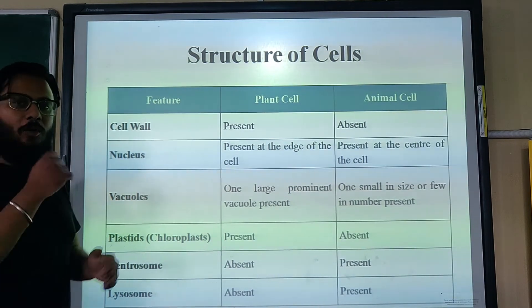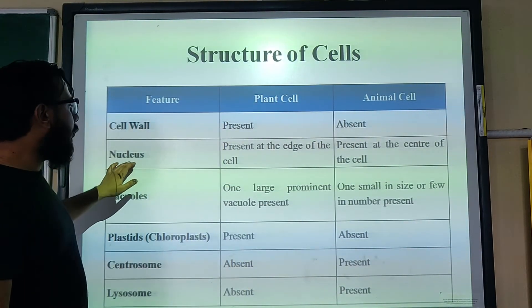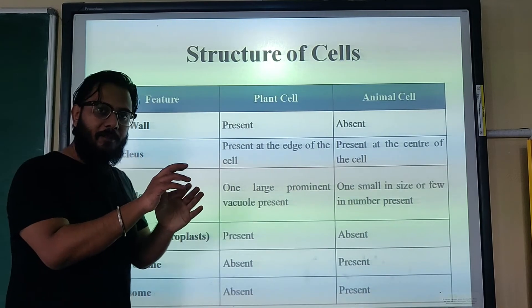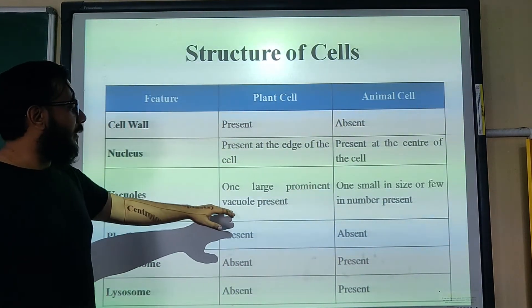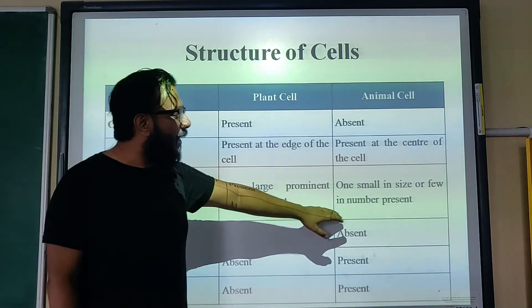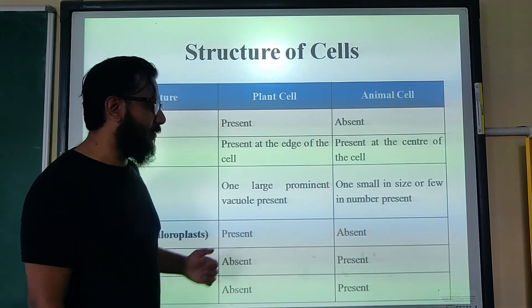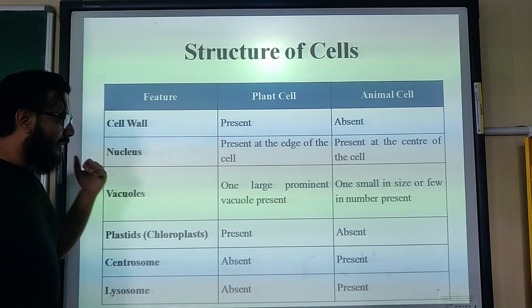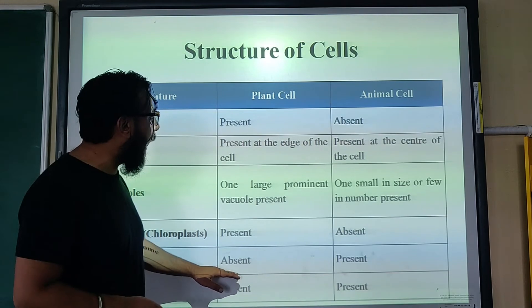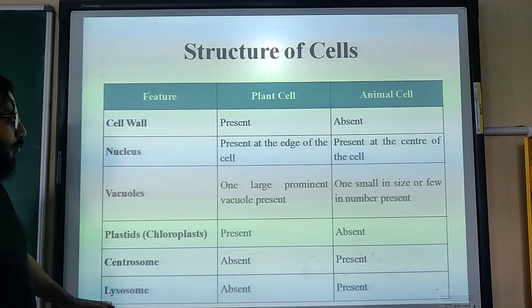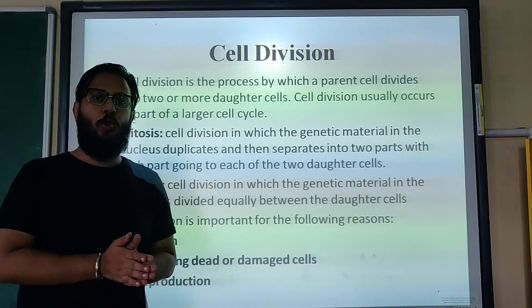This table shows the differences between plant and animal cells. The cell wall is present in plant cells but absent in animal cells. In plant cells, the nucleus is positioned at the edge of the cell, not in the center. Vacuoles are present in plants but may or may not be present in animals, and if present, are very small. Plastids (chloroplasts) give plants their green color — plants have them, animals don't. Centrosome and lysosomes are absent in plant cells but present in animal cells.